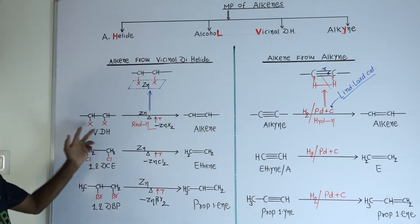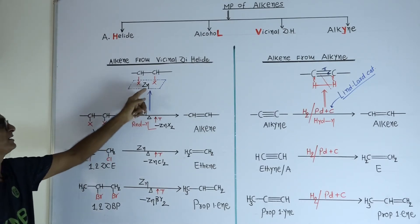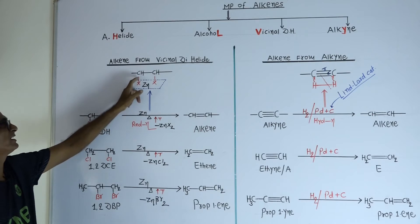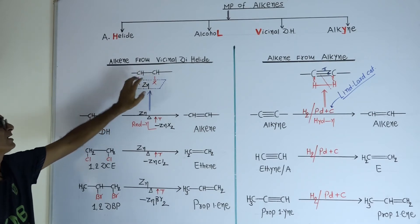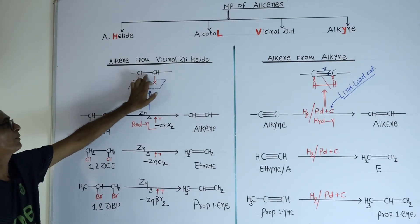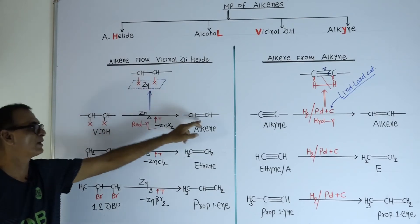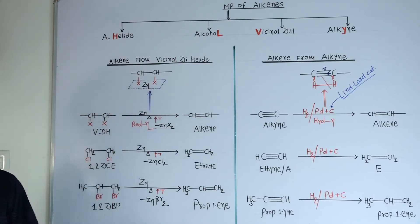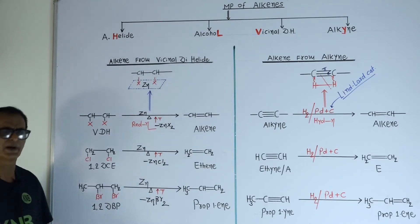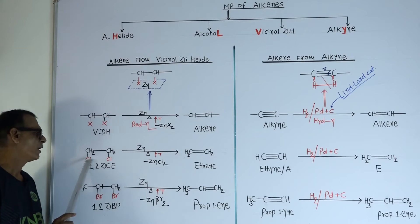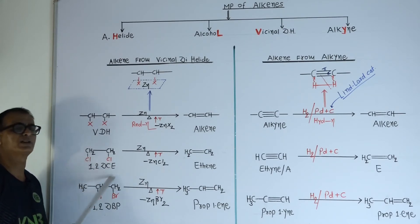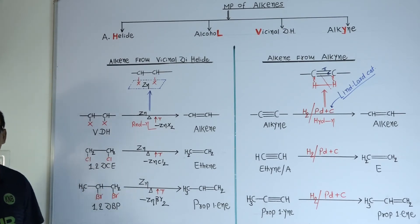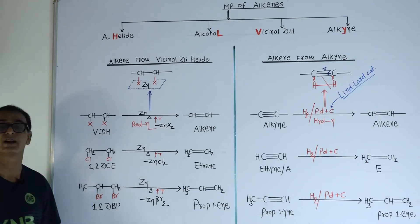Both halogen atoms are absorbed by zinc. Zinc removes them, those bonds both break, and the double bond will form. So you will get an alkene. Example: this is 1,2-dichloroethane. Its common name is ethylene dichloride, EDC.